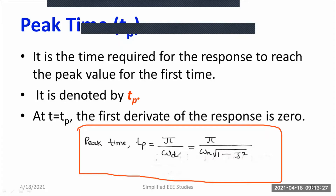Omega d is known as the damped frequency of oscillation, expressed in radians per second. If you want to write the damped frequency of oscillation in terms of natural frequency omega n, omega d equals omega n into square root of 1 minus zeta squared, where zeta is known as the damping ratio.